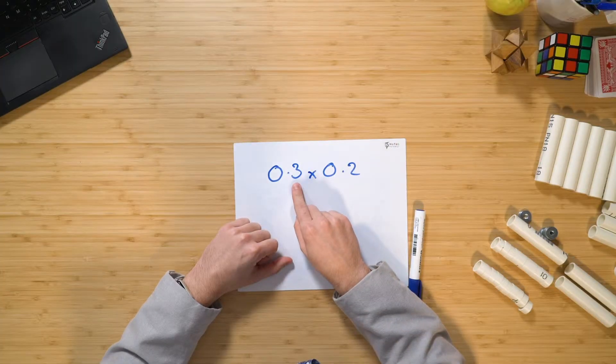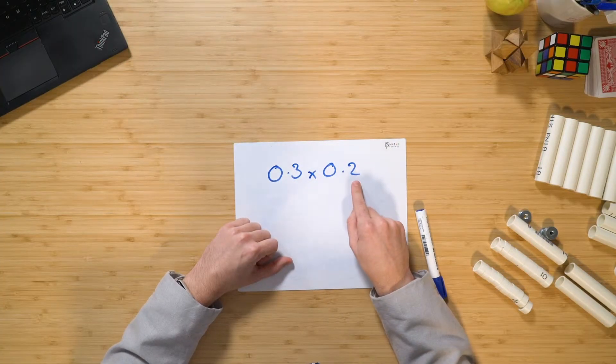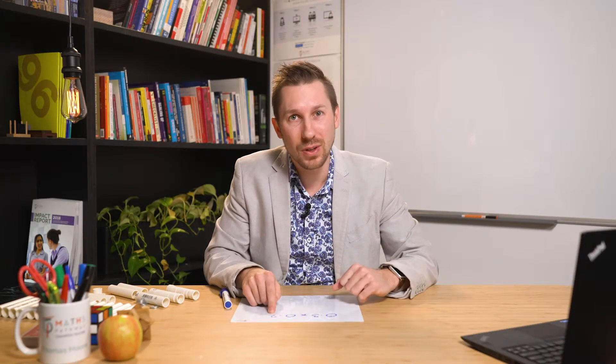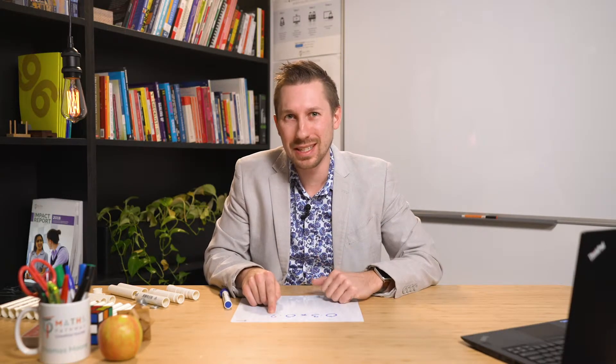Now, there's a couple of things that we need to think about here. First of all is the way in which we say the number. Notice how I said three tenths times two tenths. I'm bringing in the place value side of things here and this will make more sense in a second.